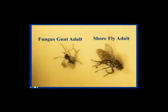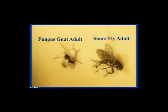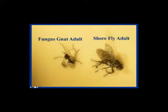To compare: fungus gnat adults have a Y-shape in the wings, resemble a mosquito, and have long legs. Shore fly adults are more robust with short antennae and five white spots on the wings. After this webinar, you should be able to easily distinguish fungus gnat adults from shore fly adults.